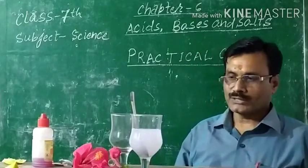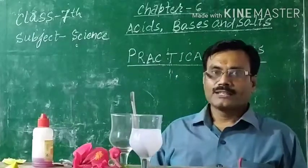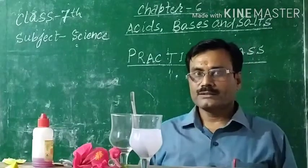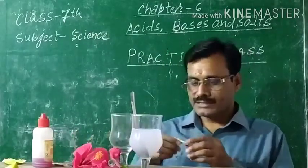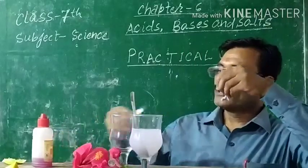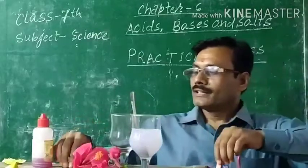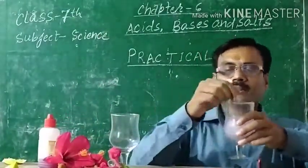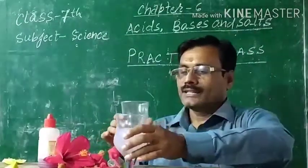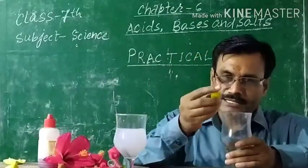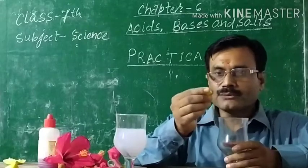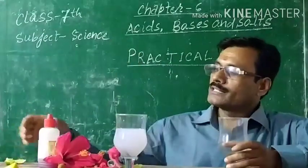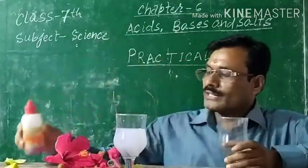Acids, bases and salts. We have read about indicators, but how indicators work — we will just watch a demonstration. I have some indicators: blue litmus paper, red litmus paper, China rose, and here I have NaOH solution — that is a basic solution — and I have lemon which is acidic. I will also use HCl (hydrochloric acid) and phenolphthalein. So, let's start the practical.